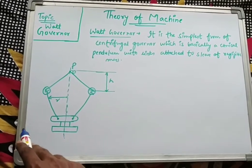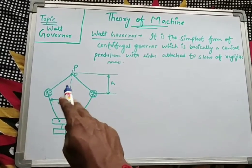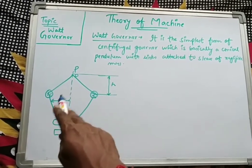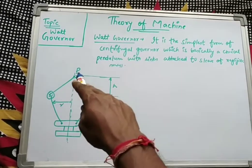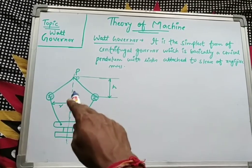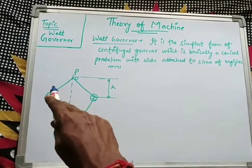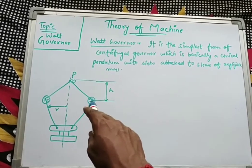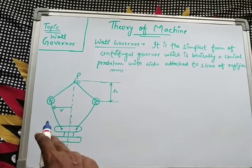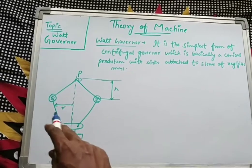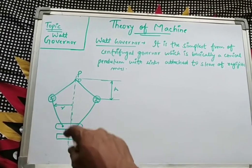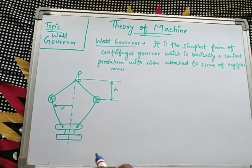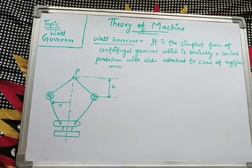In the previous class I also discussed the governor figure arrangement. We went through that these are the links, these are the fly balls, and these are the sleeves. The upper arms connect at the pivot. The distance from the pivot to the center of the fly balls is h, and the radius is the distance from the fly ball center to the middle of the sleeve.